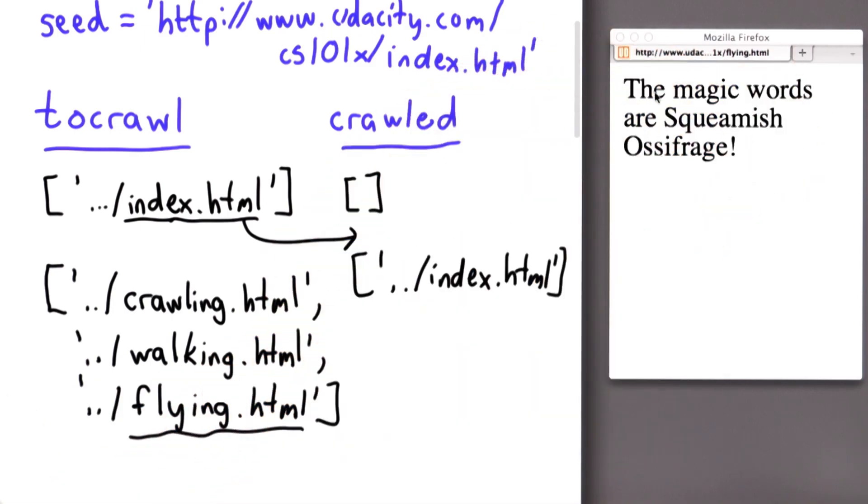So we're going to crawl the page flying.html. This page doesn't have any links. If you're not sure why squeamish ossifrage is the magic words, I would encourage you to Google that.